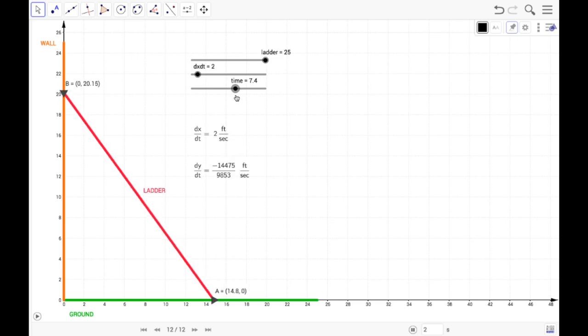So here we are at 15 feet from the wall. We see the y value is 20, just like we had calculated. And we see here that the dy/dt, or the rate at which the top of this ladder is sliding down, is negative 3/2 feet per second.